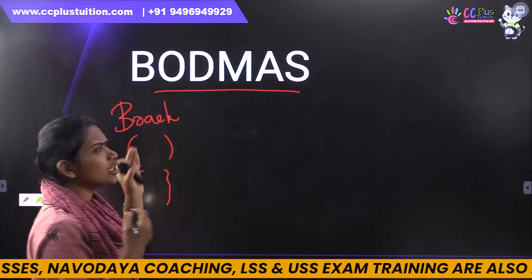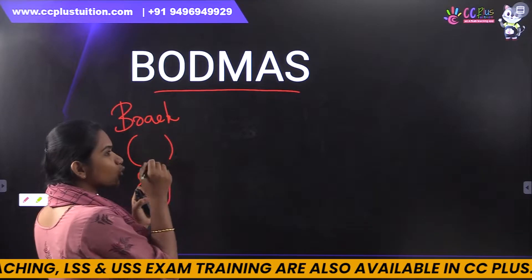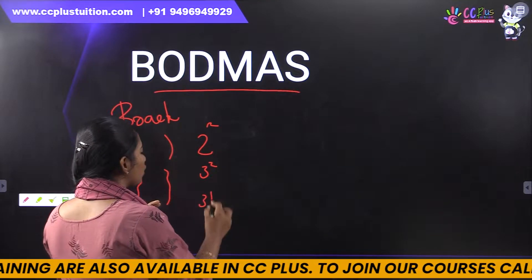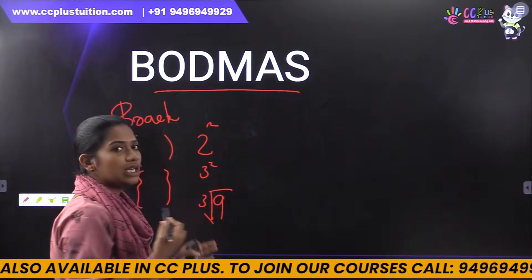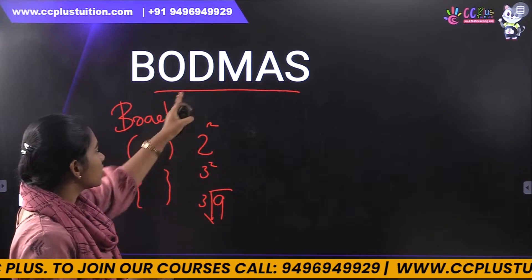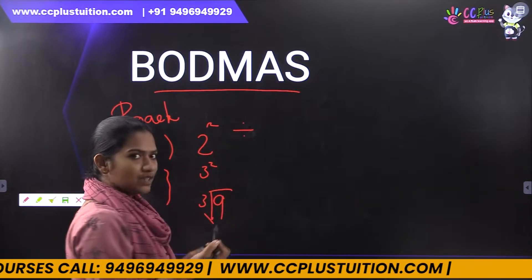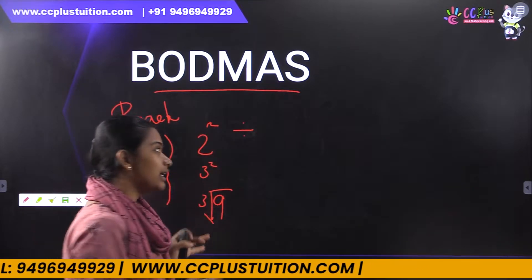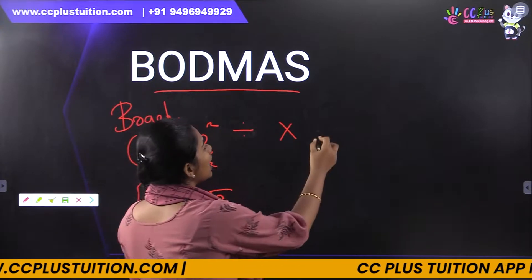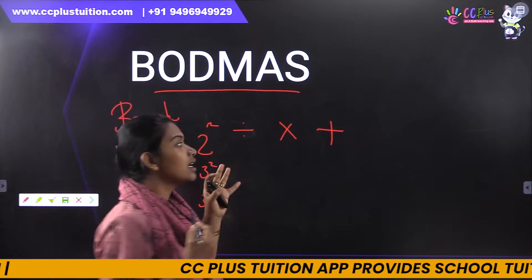Next, what does this order mean? O is for Order — squares and square roots. D is for Division. M is for Multiplication. A is for Addition. And S means Subtraction.